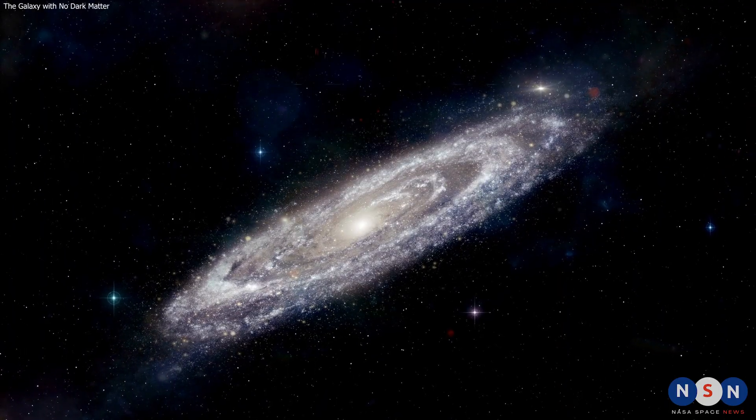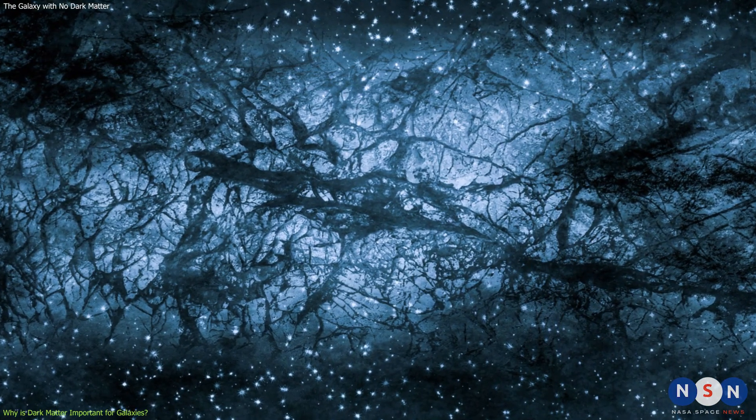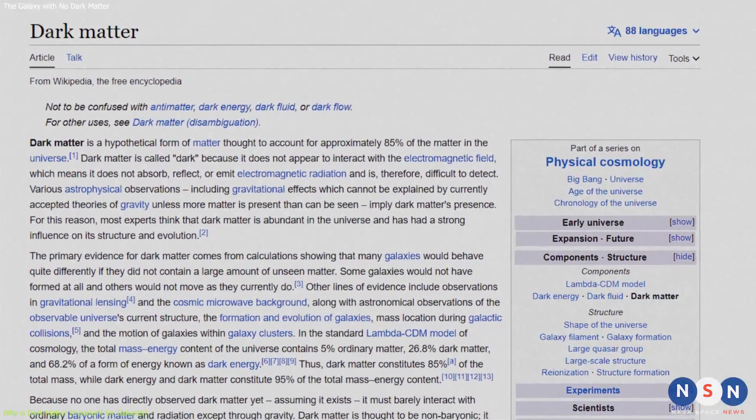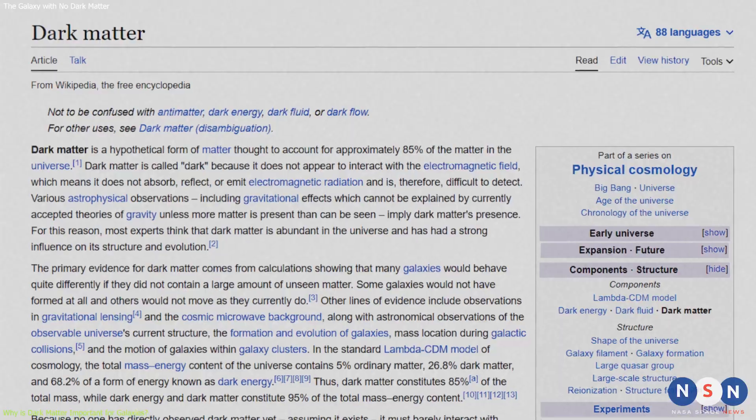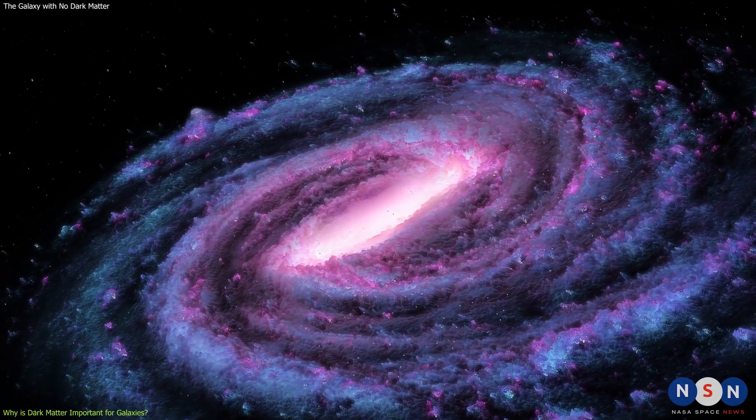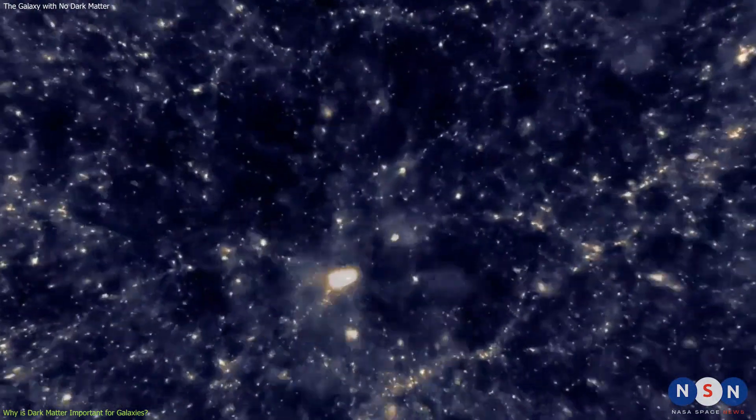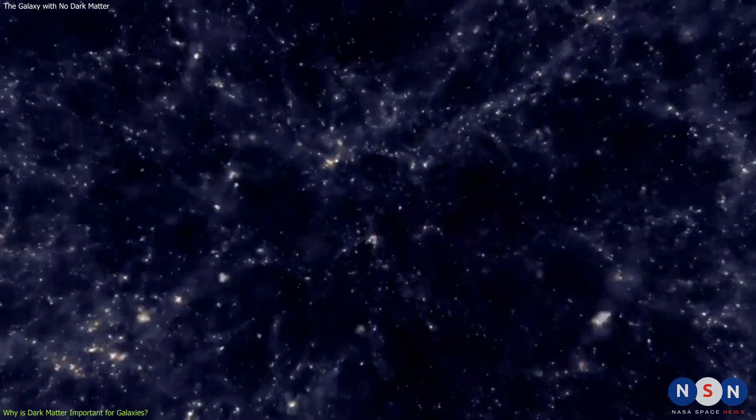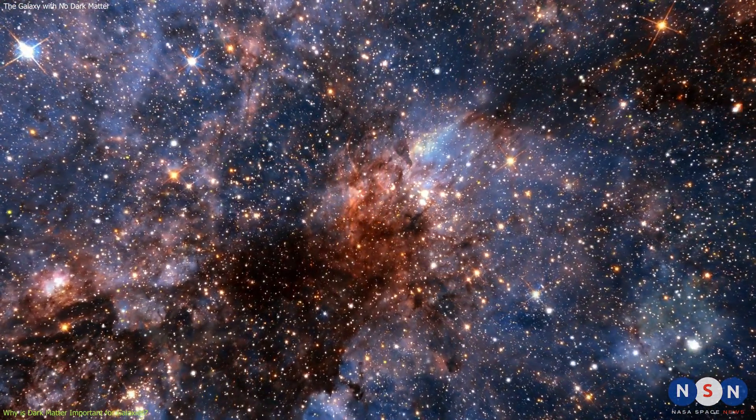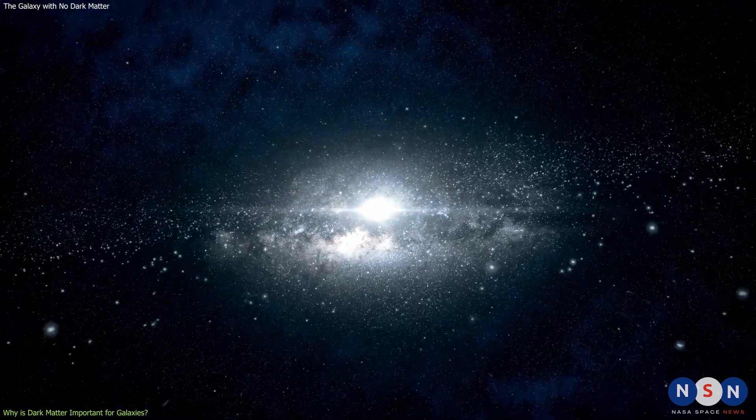Before we dive into the details of this strange galaxy, let's first review what dark matter is and why it is so important for galaxies. Dark matter is a type of matter that we cannot see or detect directly, but we know it exists because of the gravitational effects it has on normal matter, such as stars and gas. Dark matter makes up about 27% of the total matter and energy in the universe, while normal matter only accounts for about 5%. The rest is dark energy, which is responsible for the accelerated expansion of the universe.